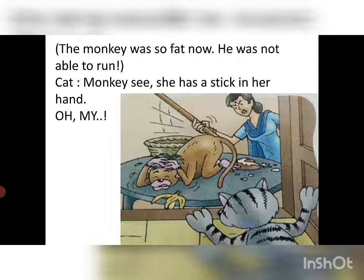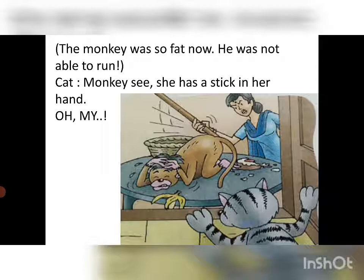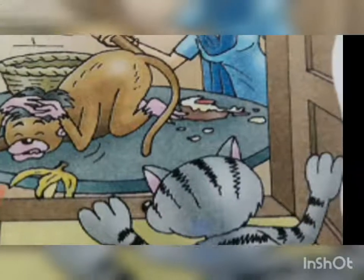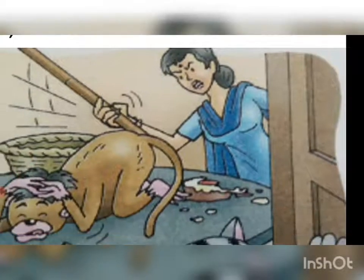Because the monkey had greedily eaten so many bananas — one, two, three, ten, eleven, twelve — in this way he had so many bananas out of greediness, and now he had become fat and was unable to run. The woman had a stick in her hand.